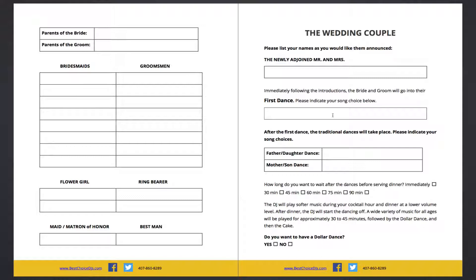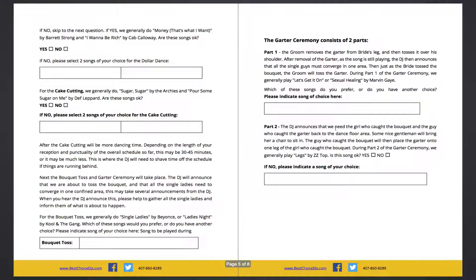I recommend at least going into the first dance. If the clients want to do all three dances together, they'll go from the first dance straight to the father-daughter dance and the mother-son dance, then usually straight into dinner. I also give the option for a dollar dance, as well as a few other options not on the template, such as the anniversary dance — also known as the longest married dance — and the shoe game.